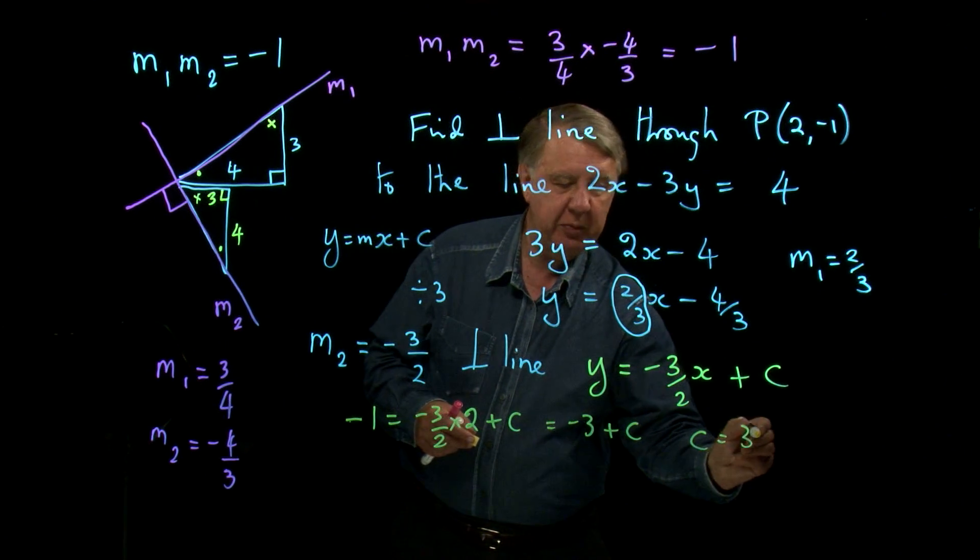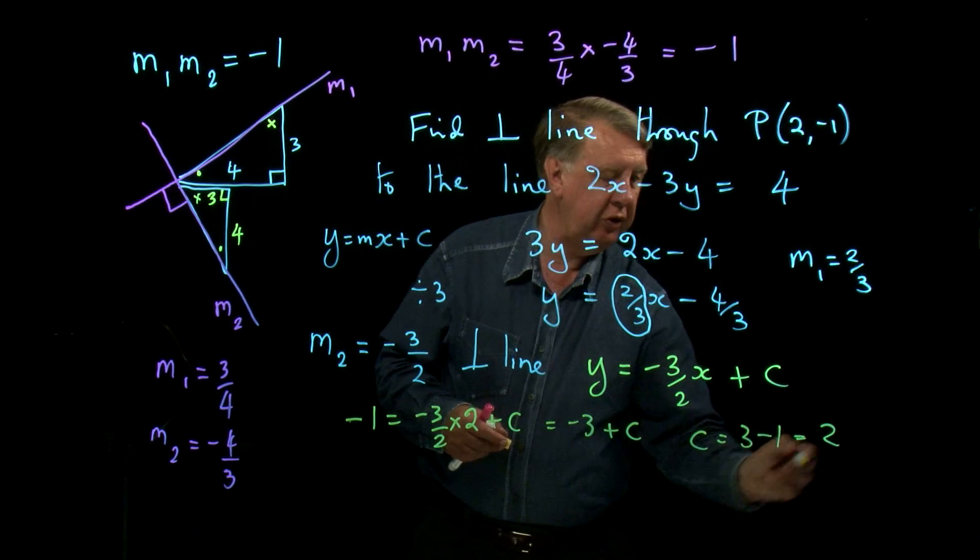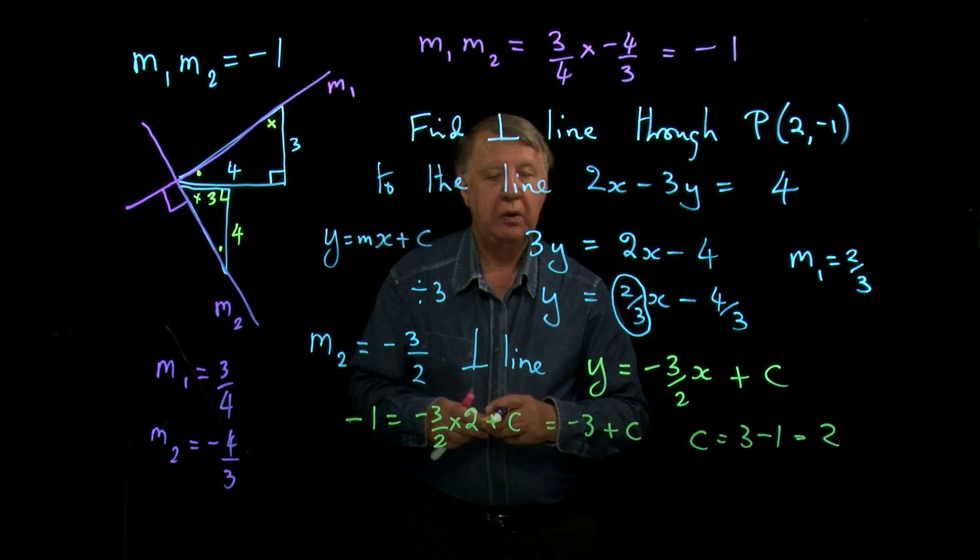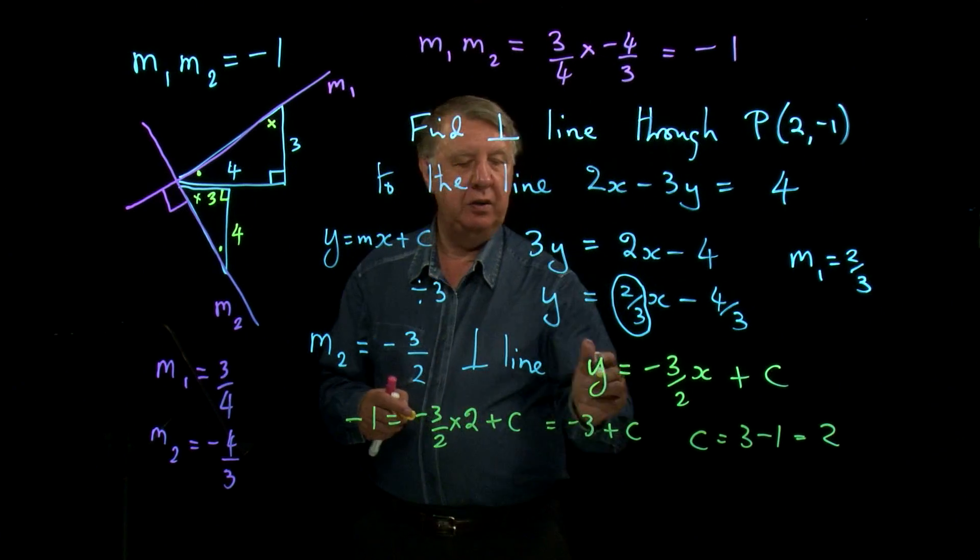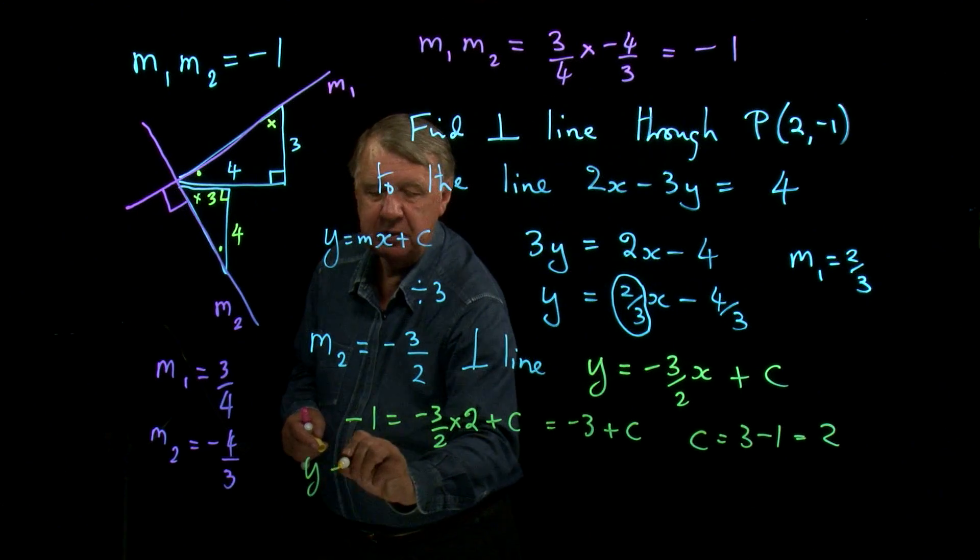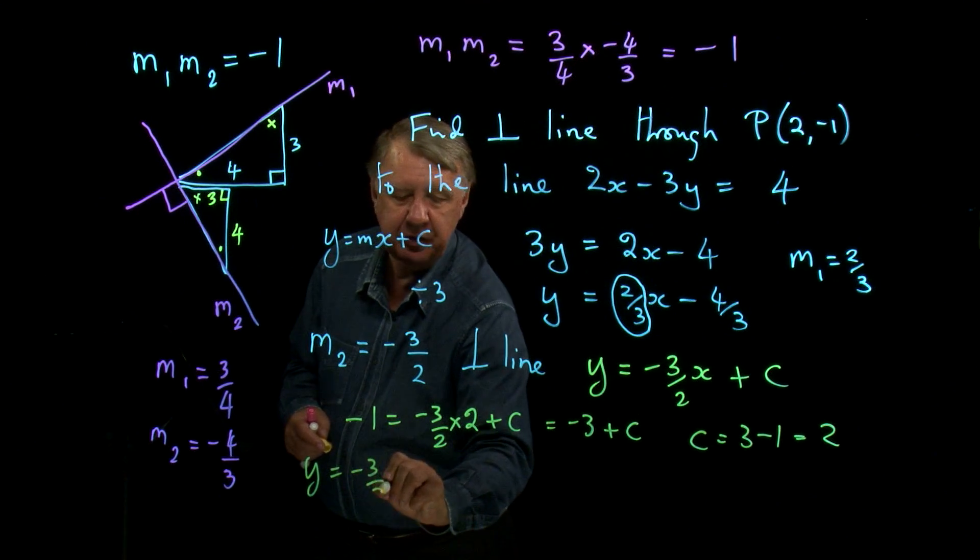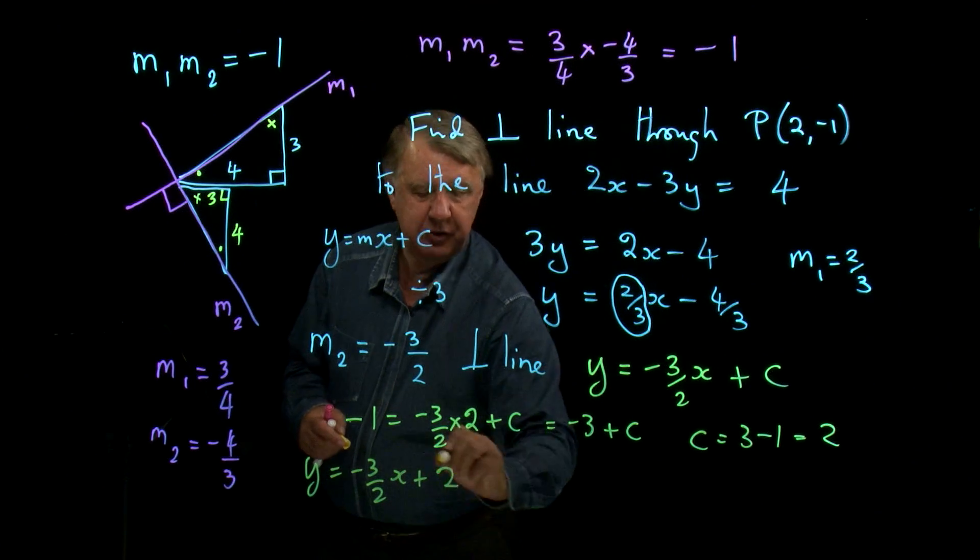c equals 3 minus 1, which is 2. So my perpendicular line is y equals minus 3 over 2x plus 2.